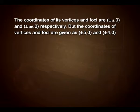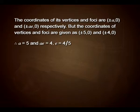The coordinates of its vertices and foci are plus or minus a comma 0 and plus or minus ae comma 0 respectively. But the coordinates of vertices and foci are given as plus or minus 5 comma 0 and plus or minus 4 comma 0. Therefore, a equals 5 and ae equals 4, so e equals 4 upon 5.